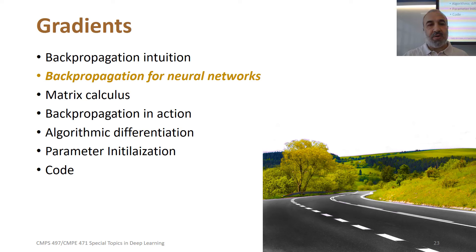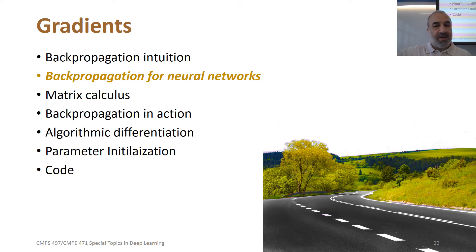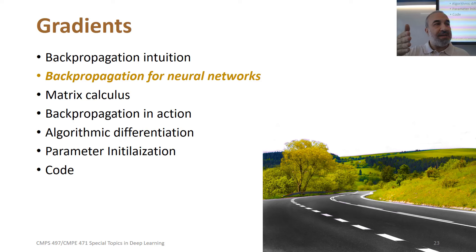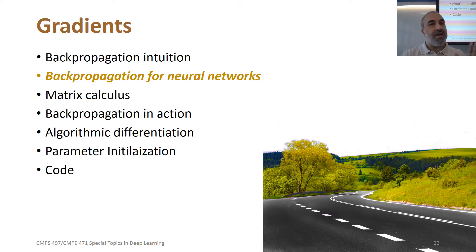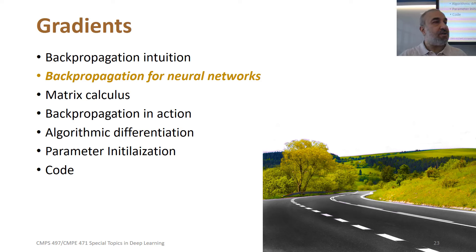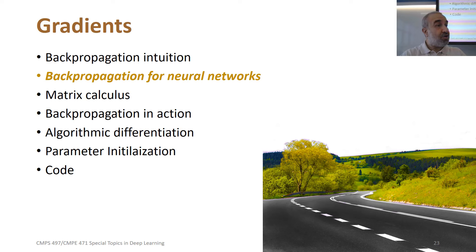We saw on different examples how we do the forward pass where we compute the actual values until the output, and then in the backward pass we compute the local derivatives — which you can also do in the forward pass — and then by the chain rule we can compute the derivatives up to the inputs and all the parameters.